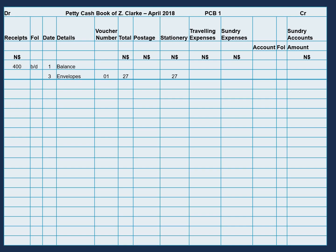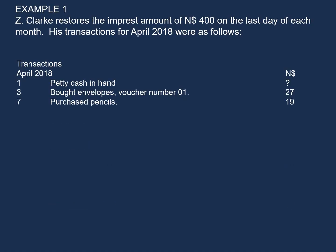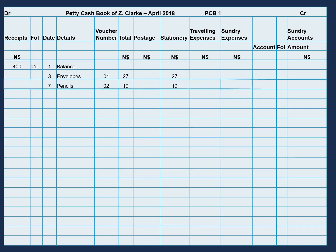On the 7th, purchased pencils for $19. This transaction will come on the credit side of our petty cash book. The date is the 7th, the details is pencils. The voucher number was not entered in the example, so we continue with our voucher numbers by adding 1 — our previous voucher number was 01, so this one will be 02. The amount was $19, which we enter in the total column, and pencils is part of our stationery expenses, so we will group it under stationery.